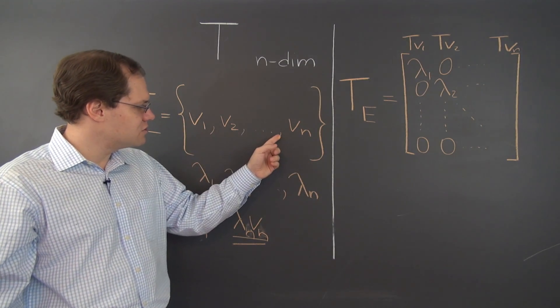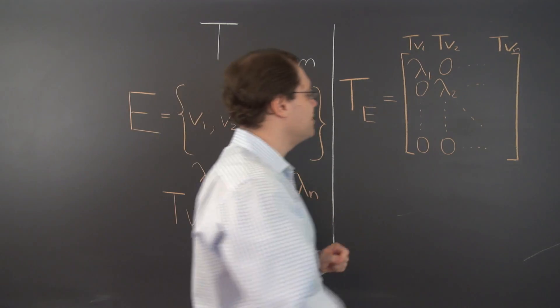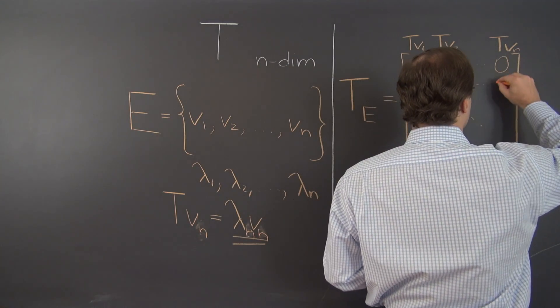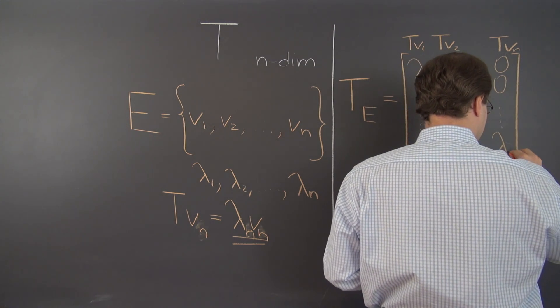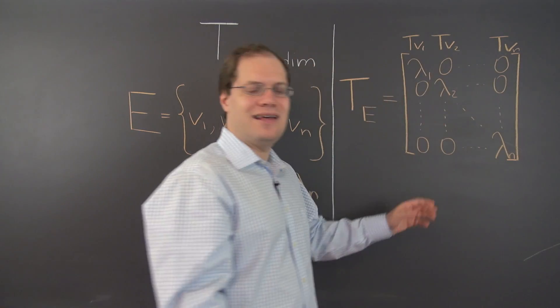So the coefficients are a bunch of 0s followed by lambda n. So 0, 0, all kinds of 0s, lambda sub n. And there you go.